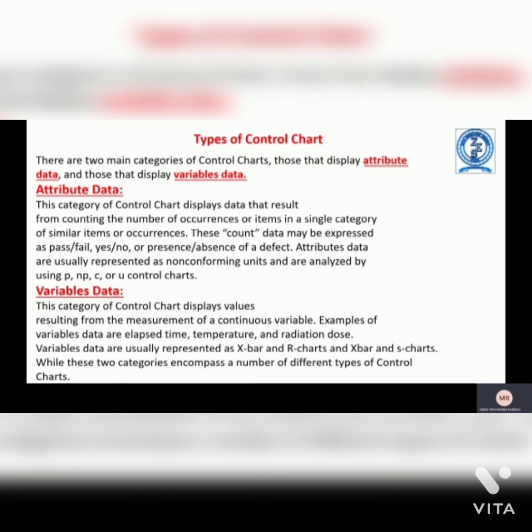Let's see the types of control charts. There are two main categories: attributes data and variables data. For attributes data, this category of control chart displays data that results from counting the number of occurrences or items in a single category of similar items. This count data may be expressed as pass/fail or presence or absence of a defect. Attributes data are usually represented as non-conforming units and are analyzed using P, NP, C, or U control charts.